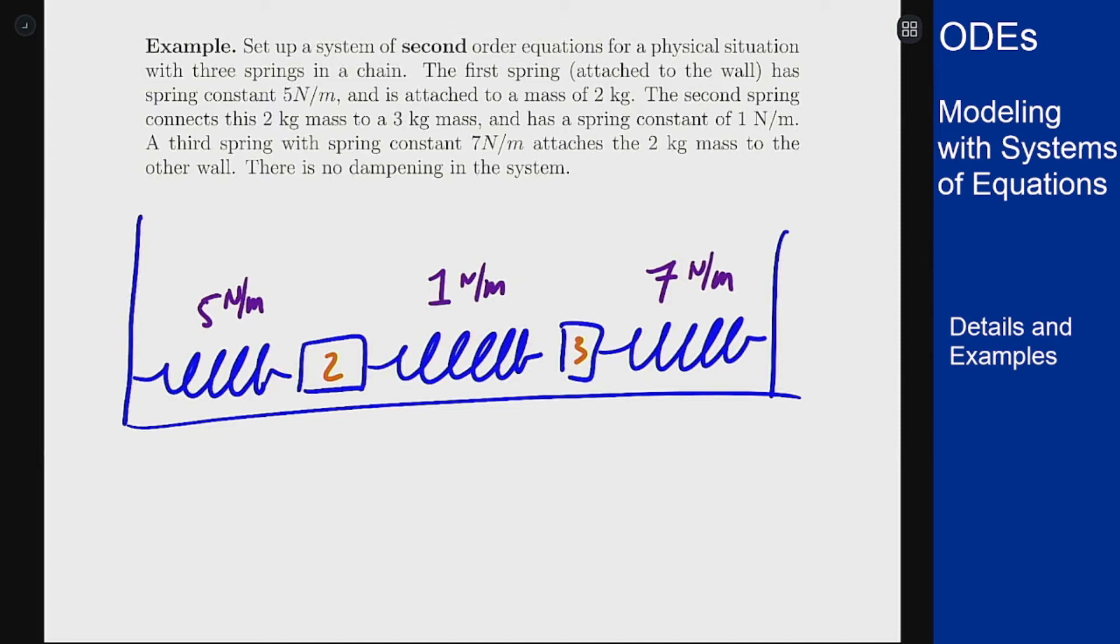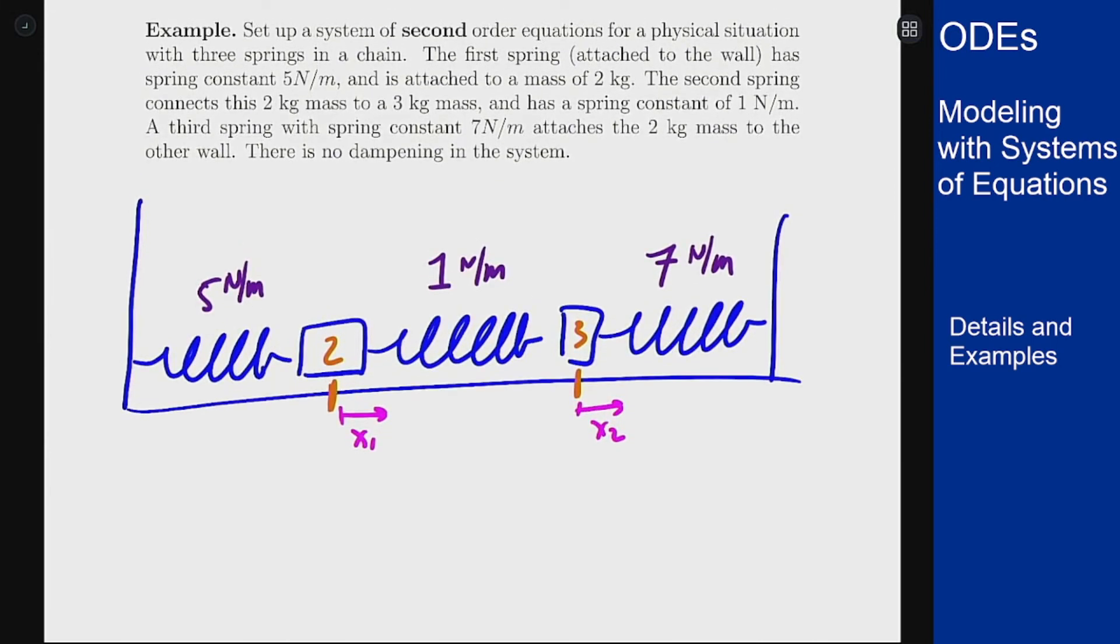So how do we set up this system? First let's mark out the zero points for each of these masses where they would sit at rest with no adjustment and no perturbing. We'll let x1 be how far that is pulled that way and x2 how far this mass is also pulled to the right. I want to write a system for this in terms of how it's going to behave based on x1 and x2.